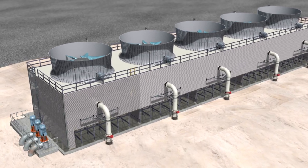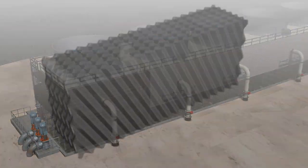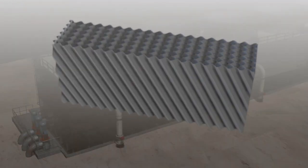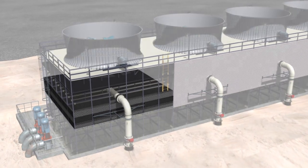Cooling towers typically utilize corrugated cellular fill media. To optimize thermal performance, it's imperative to achieve even, balanced water loading across the fill media.